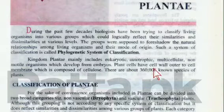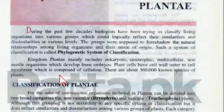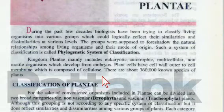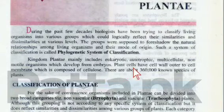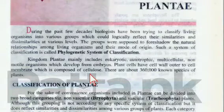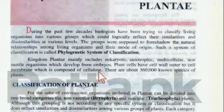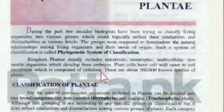Plant cells have a cell wall outer to the cell membrane, which is composed of cellulose. Remember that in fungi the cell wall is made of chitin, whereas in plants the cell wall is made of cellulose.